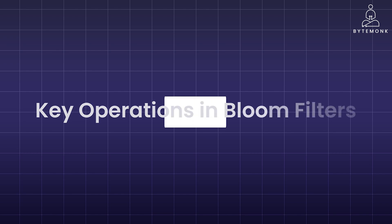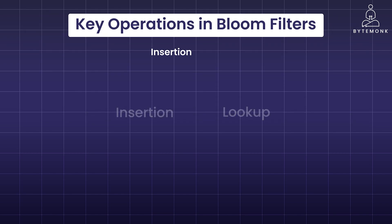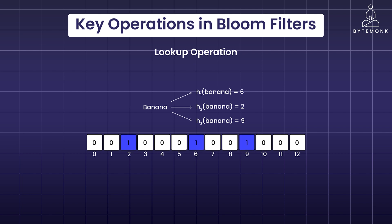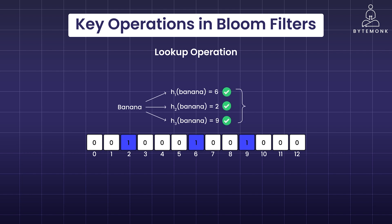Bloom filters have two key operations: insertion and lookup. To insert an element, it is processed through multiple hash functions — typically denoted as k hash functions — and each function maps the input to a specific position within the bit array, setting those bits to 1. The lookup operation checks if an element might be present by passing it through the same k hash functions and examining the bit positions. If all positions are set to 1, the element could be present. However, if any position is 0, the element is definitely not in the set. This ensures quick responses to queries.